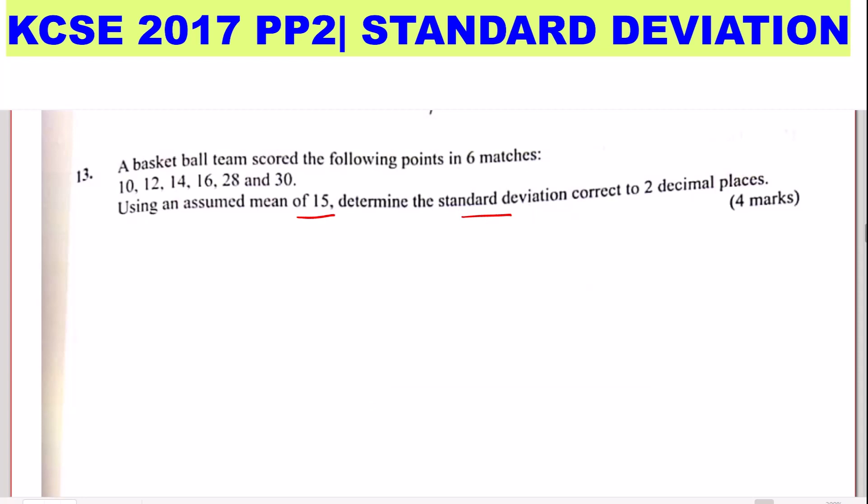Now to get the standard deviation of this type of data which is ungrouped, we use this formula. Standard deviation is given by the square root of the variance. And how do you get the variance? We shall get the variance by getting the summation of the deviation squared divided by total frequency. In this case is the six matches, the points. These are six matches.